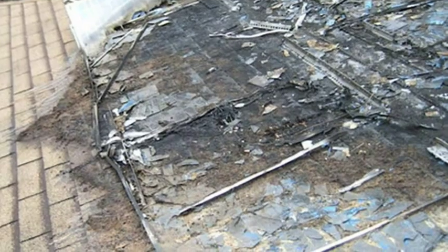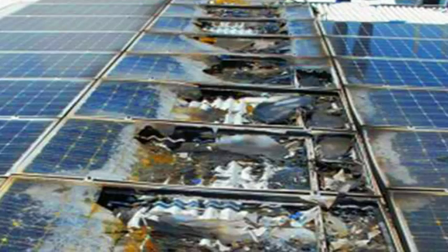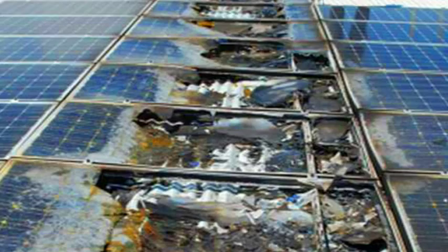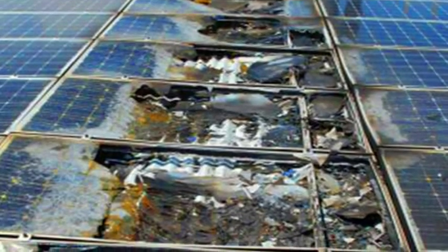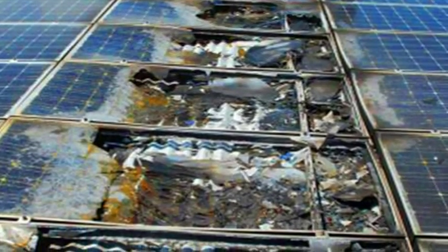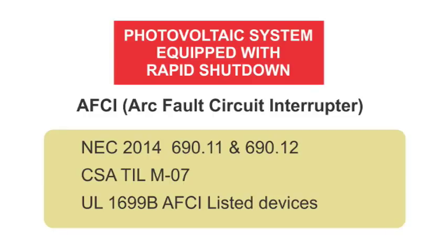As a result of fires caused by faults in solar PV systems, new requirements for solar PV systems have been introduced to provide additional protection from fires caused by arc faults. Solar PV systems now require arc fault protection from listed arc fault current interruption devices, also called AFCI devices, like inverters or combiner boxes.